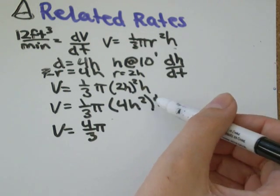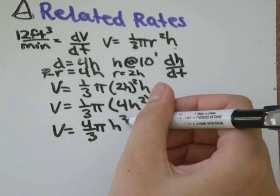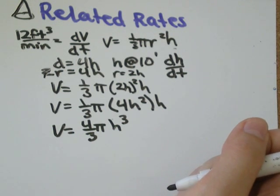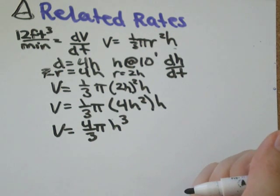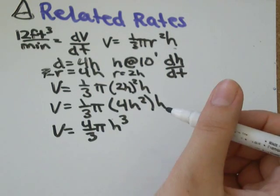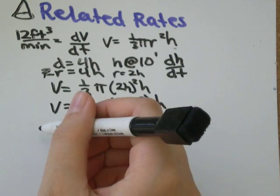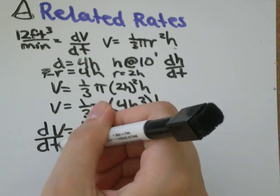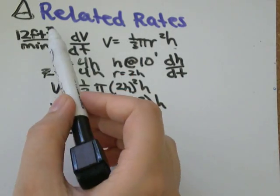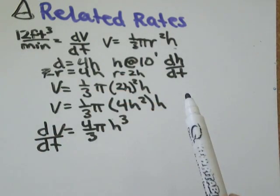And then h squared times h would just be h cubed. So if we differentiate this with respect to time, this V will become dv over dt. So that's good. We know what that is equal to in our formula.